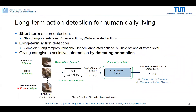In short-term action detection, the focus is on short-term relations, and the public dataset has sparse and well-split actions. In long-term action detection, the actions are more complex and it is focused on long-term relations. In the dataset, it has densely annotated actions.